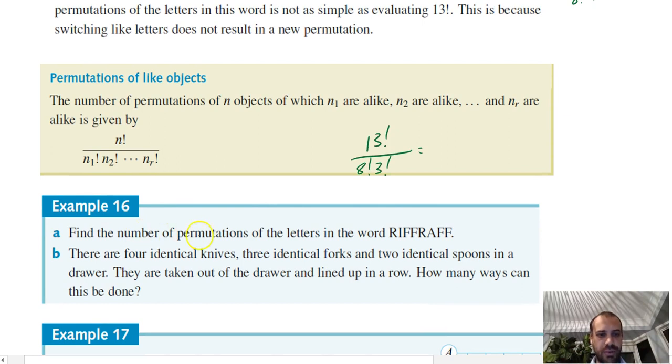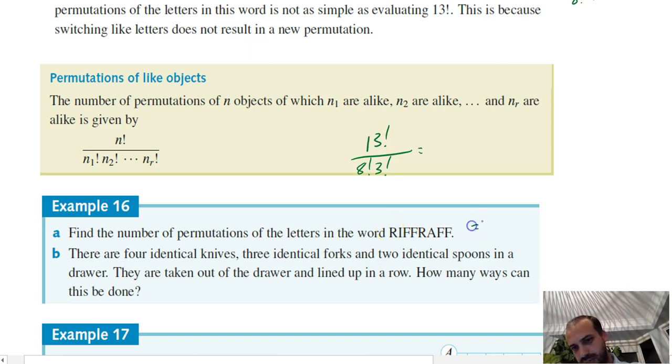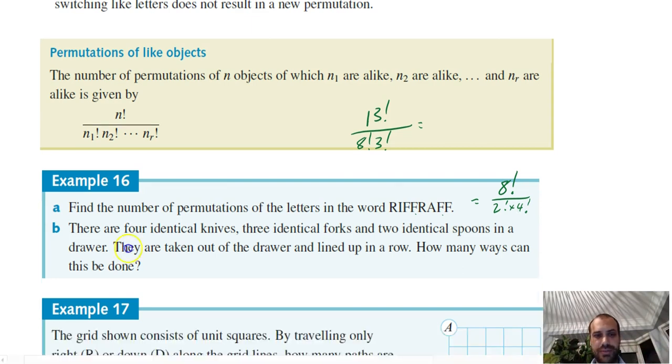Okay, find the number of permutations of the letters in the word riffraff. Okay, so that's going to be 8 factorial, because I see 8 letters. I see 2 R's, so that's going to be 8 factorial divided by 2 factorial, and I see 4 F's, 1, 2, 3, 4 times 4 factorial. Okay, and then calculate that. I'm not going to get stuck into that, but that's how you do it.